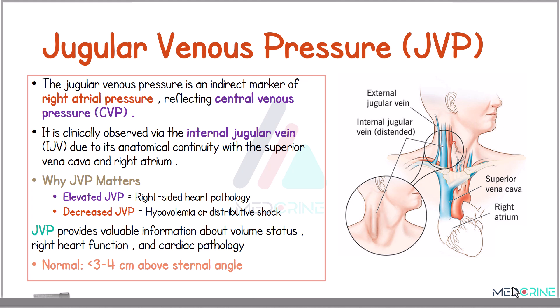Clinically, the jugular venous pressure helps to assess volume status and right heart function. You need to remember that the normal jugular venous pressure is less than 3 or 4 cm above the sternal angle.